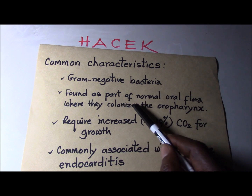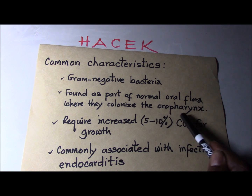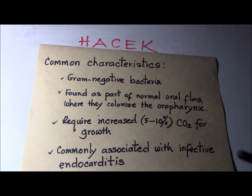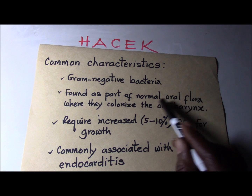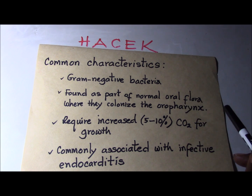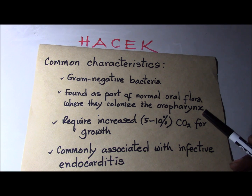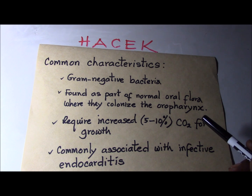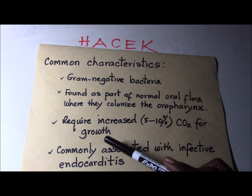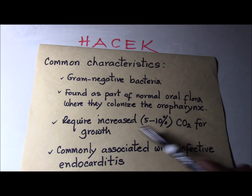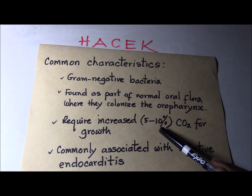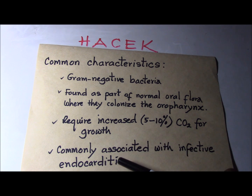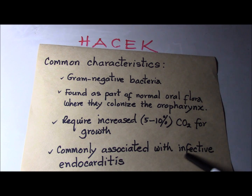They are found as part of the normal oral flora, colonizing the oropharynx — in other words, they are commensals and generally harmless in those locations. However, once the area is breached, they can cause infection. When introduced into healthy tissue, they have the potential to form abscesses and become invasive. They also require increased carbon dioxide for growth — about 5 to 10 percent CO2.